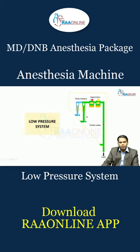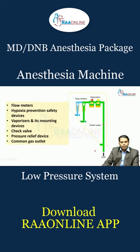This pressure range is based on the flow from the flow control valves and the presence of back pressure devices like check valves and back pressure from the machine. The components included in this system are: flow meters, hypoxia prevention safety devices, vaporizers and their mounting devices, the check valve, the pressure relief device, and the common gas outlet.